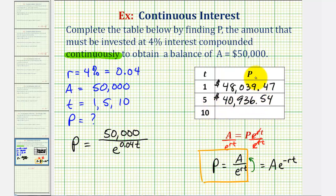Now it should make sense that P is less if T is five years, since we have five years to earn interest, whereas when T is one, we only have one year to earn interest to obtain the $50,000.